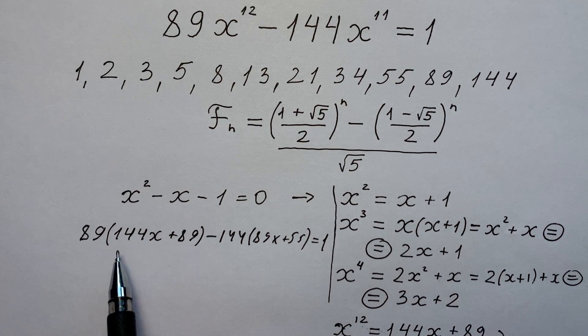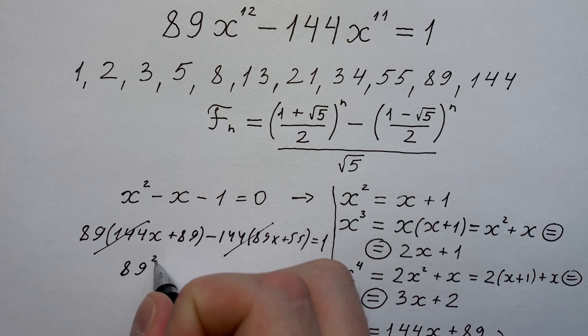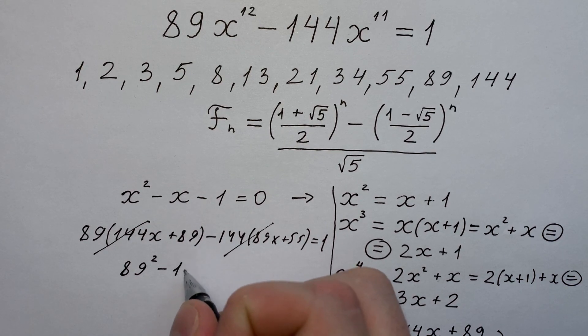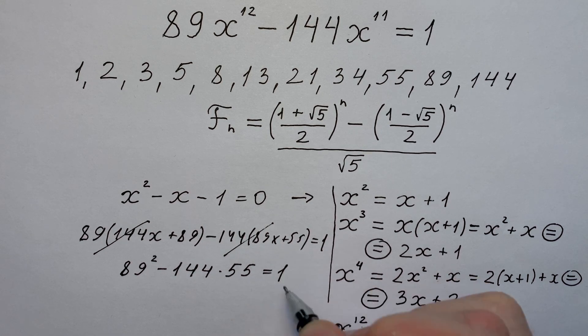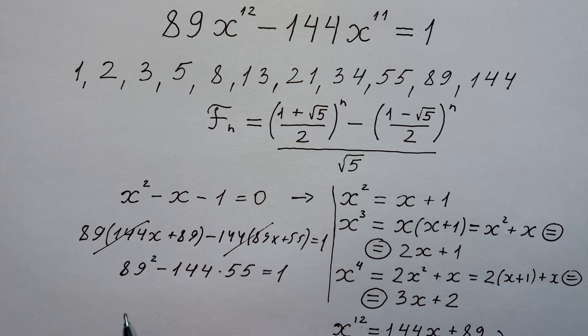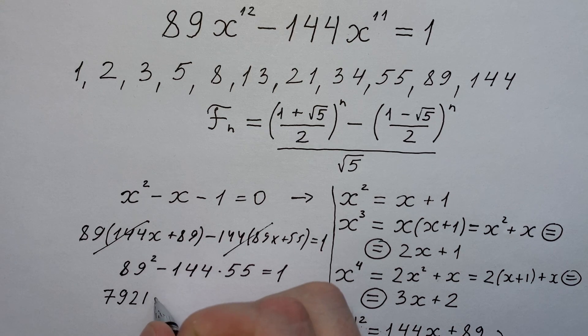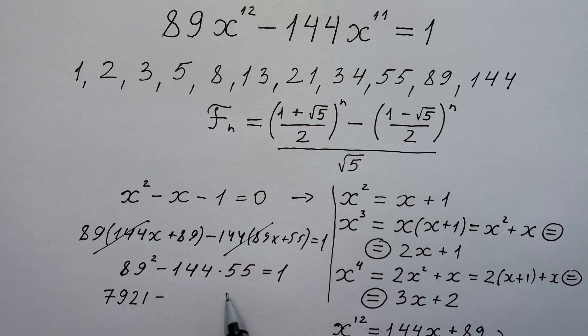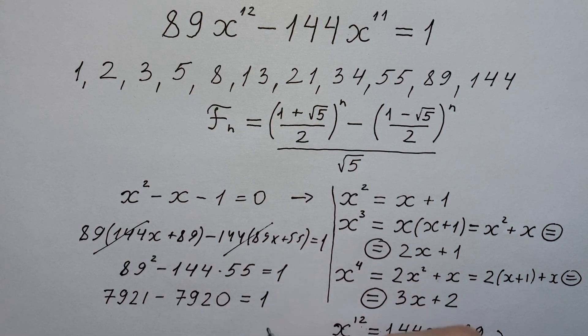The coefficients on the x are 0 because these two members are canceling. And all we have is 89 squared minus 144 times 55, and it equals 1. But is that true? Let's check. 89 squared equals 7921 minus 144 times 55 equals 7920. And of course, it equals 1.